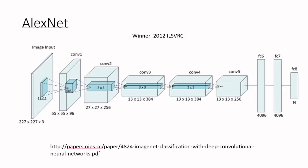AlexNet, the 2012 winner, consists of five convolutional layers — a significant increase over the two or three used previously. These five convolutional layers are followed by three fully connected layers for decision-making. The numbers indicate signal sizes at different stages, convolution mask sizes, pooling settings, and so on.